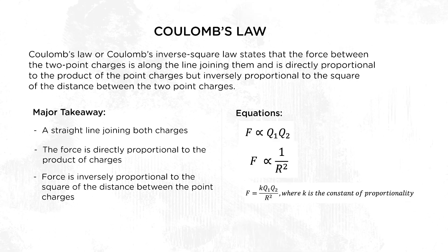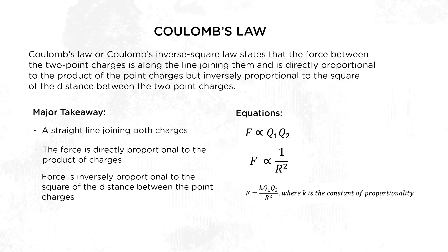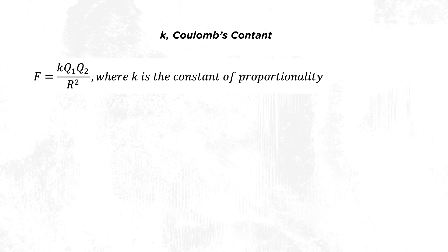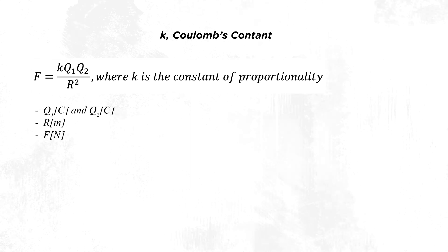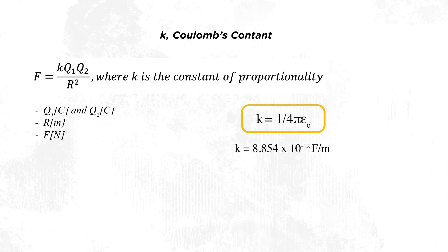We can combine both equations to form one scalar equation, which gives us F is proportional to the product of Q1 and Q2 divided by r squared, times k, where k is the constant of proportionality. Also known as Coulomb's constant, k depends on the system of units used. In SI units, the charges Q1 and Q2 are in coulombs, the distance r is in meters, and the force is in newtons. The constant k is therefore 1 divided by 4 times pi times epsilon naught.